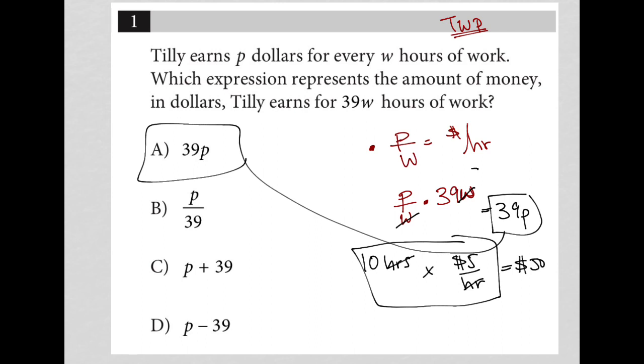I did the exact same thing here. I'm saying the amount of money she makes is P per W. I don't have a number for it, but I know that it's P per W. The amount of hours she worked based upon what the question tells me is 39W. So like the 10 hours, I just write 39W here. And then all I'm doing is multiplying those together, canceling out the same unit here, the Ws. And what I'm left with again is 39P. So our answer here is choice A.